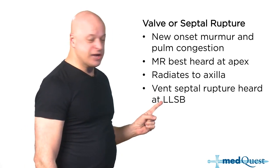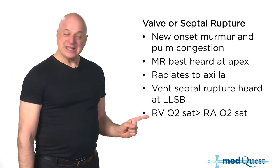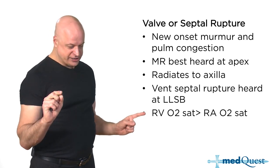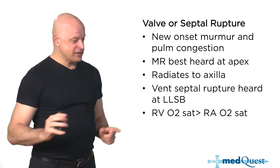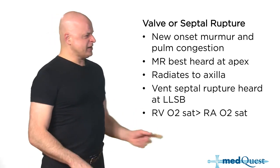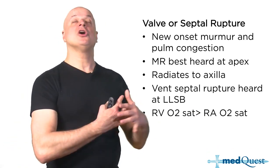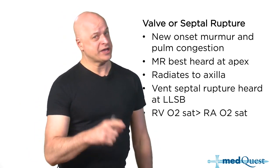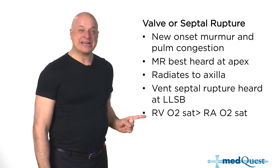Ventricular septal defects are heard at the lower left sternal border — the same place as HOCM. With a septal rupture, you put a catheter into the right side of the heart and sample blood from the right atrium where saturation is low, then advance into the ventricle where saturation goes up.